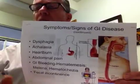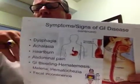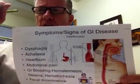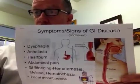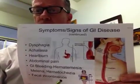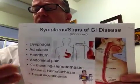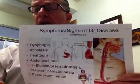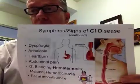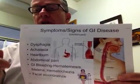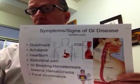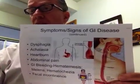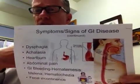Melena means there's a bleed somewhere up the alimentary canal and the expression of it is through the anus. As opposed to hematochesia, where the disease process could be a hemorrhoid or neoplastic — the patient is defecating bright red blood, meaning the bleed is not up in the alimentary canal where there's a large digestive enzyme pool.